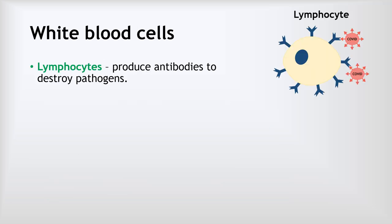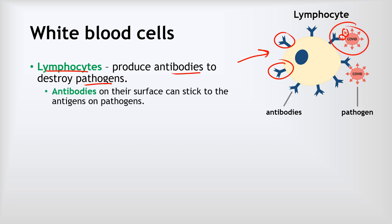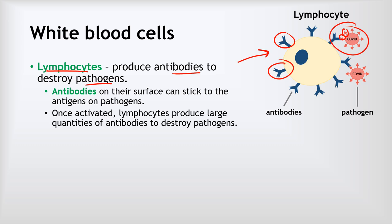White blood cells have two main kinds. Lymphocytes produce antibodies which destroy pathogens. These Y-shaped chemicals on the surface of lymphocytes stick to the antigens on the surface of the pathogen and help to destroy it. Once a lymphocyte gets activated, it produces lots of copies of itself to make huge amounts of antibodies to quickly destroy all of those pathogens. Do check out the video on the immune system for more detail on this.